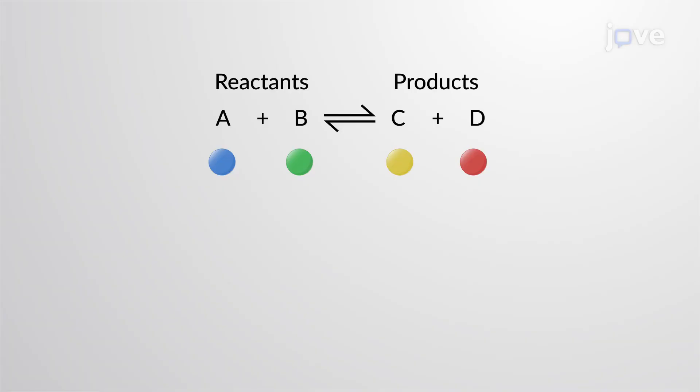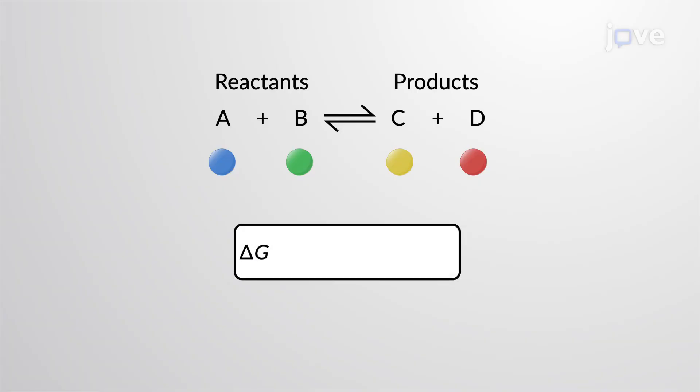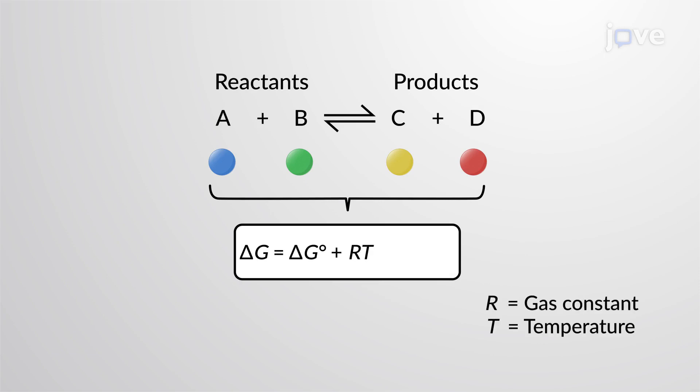The free energy change, or delta G, of a particular reaction is the sum of the standard free energy and RT times the natural log of the ratio of the concentrations of products to reactants.